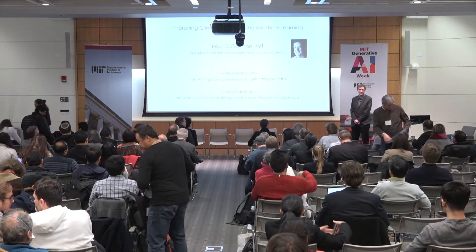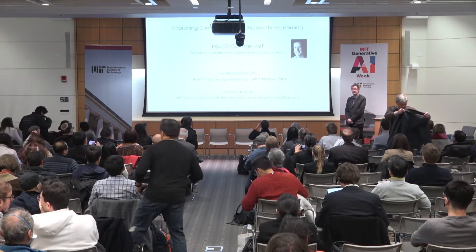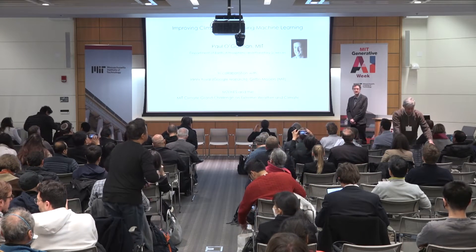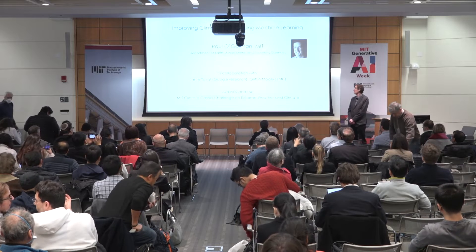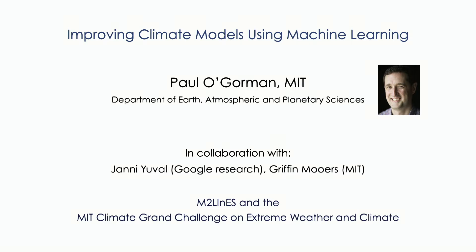Hi everybody. I'm delighted to talk today about climate, and in particular climate modeling, and how we can improve climate modeling using machine learning in general and also generative AI. This is work with Yanni Yuval at Google and Griffin Moors at MIT. I'll also highlight some results from two projects: the M-squared lines international project, and our own climate grand challenge on extreme weather and climate.